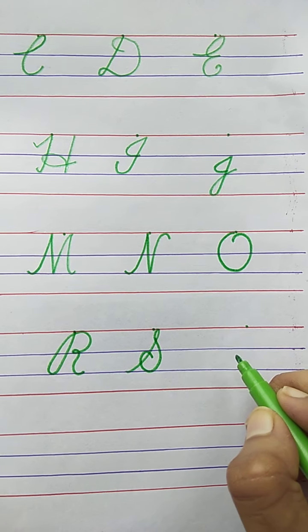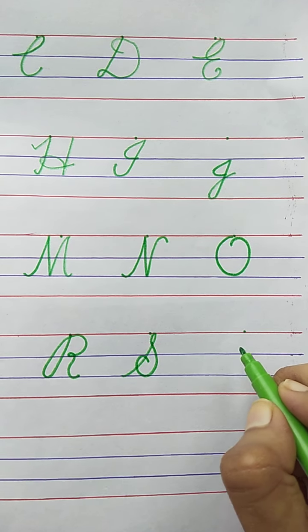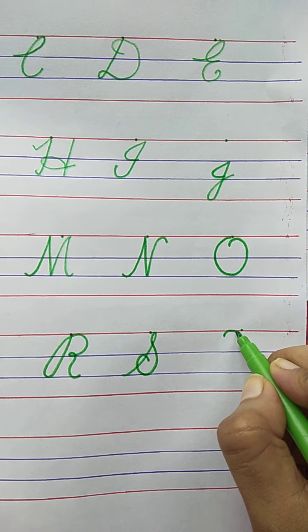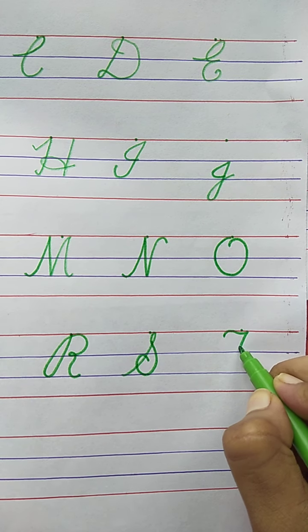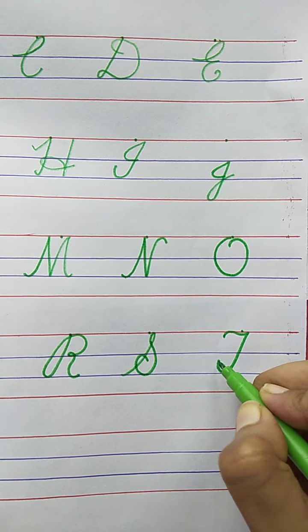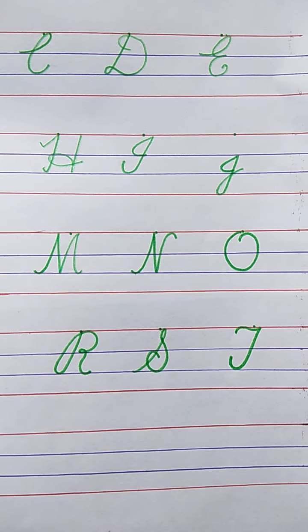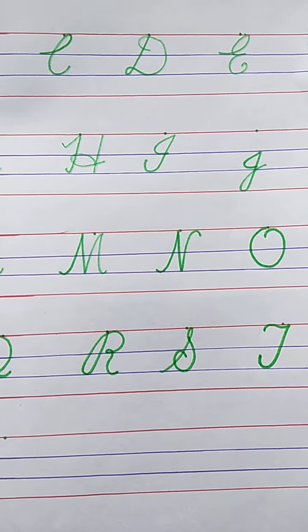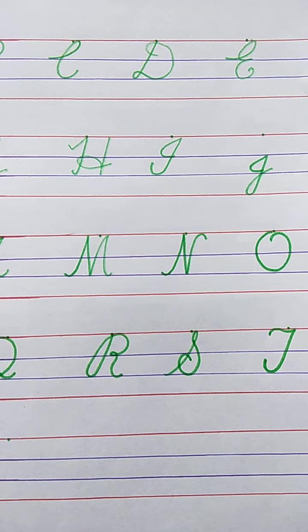Now, tell me the next letter. T. T for Tap. Very good. The spelling of Tap is T-A-P. Tap.